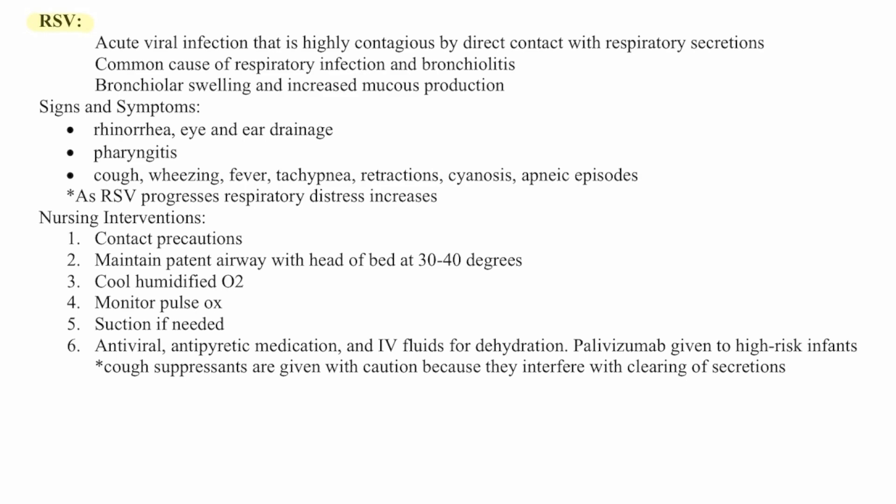Then we have RSV — an acute viral infection that's highly contagious by direct contact with respiratory secretions. It's a common cause of respiratory infection and bronchiolitis, with bronchiolar swelling and increased mucus production. Signs and symptoms include rhinorrhea, eye and ear drainage, pharyngitis, cough, wheezing, fever, tachypnea, retractions, cyanosis, and apneic episodes. As RSV progresses, respiratory distress increases.